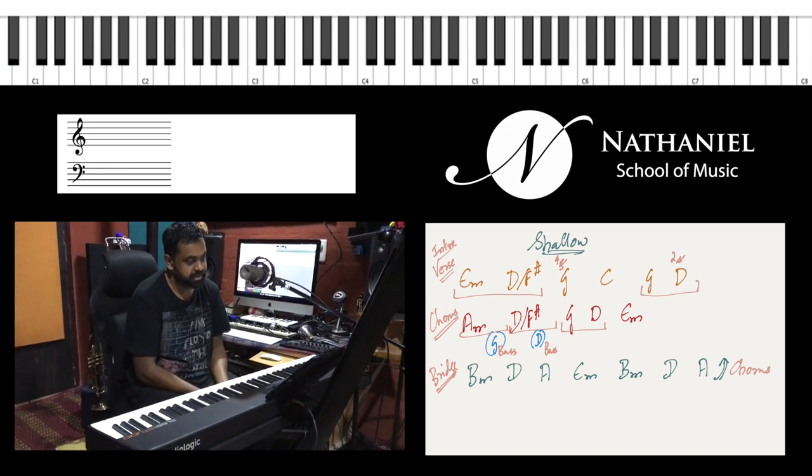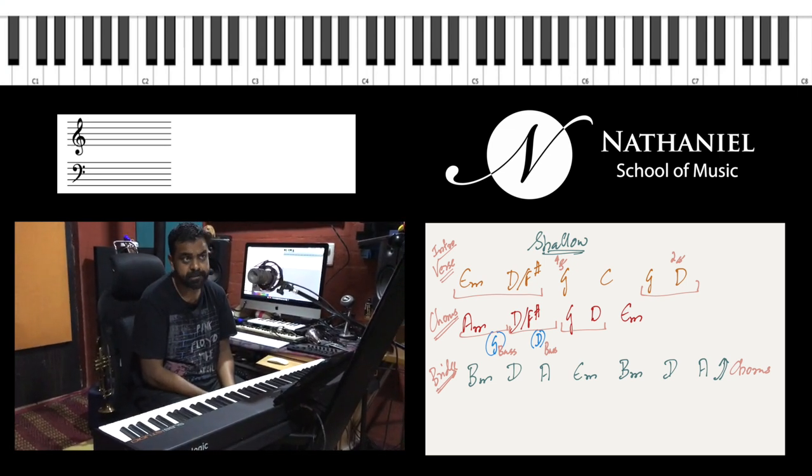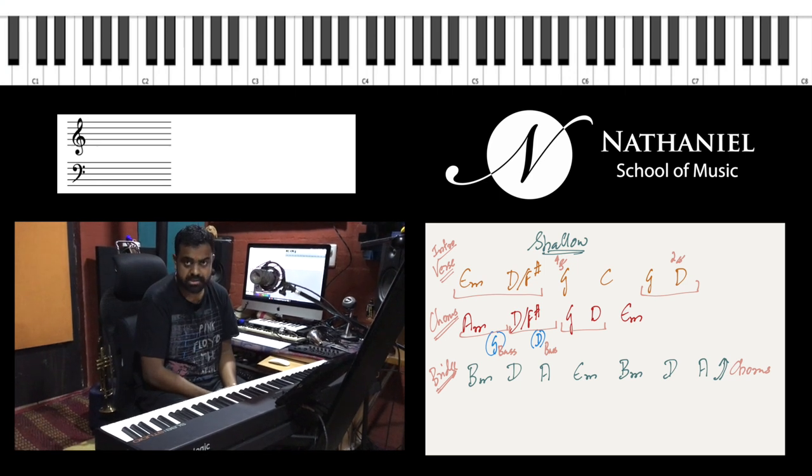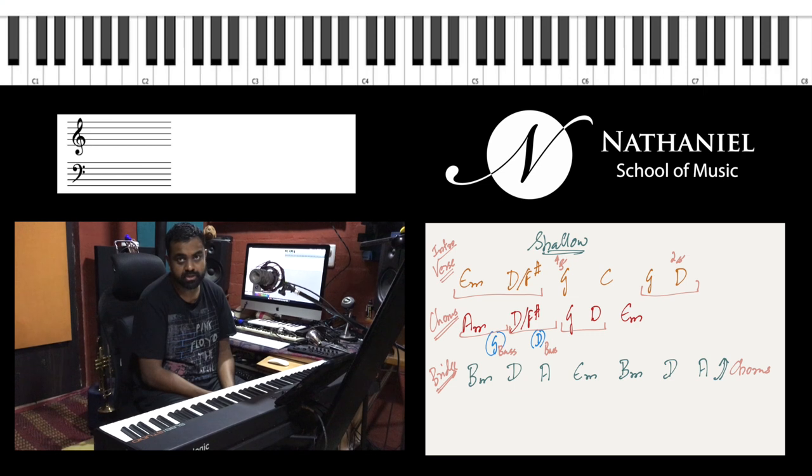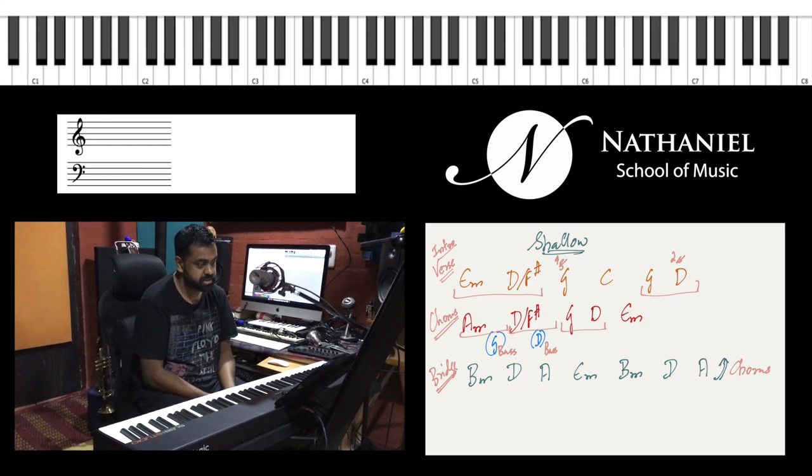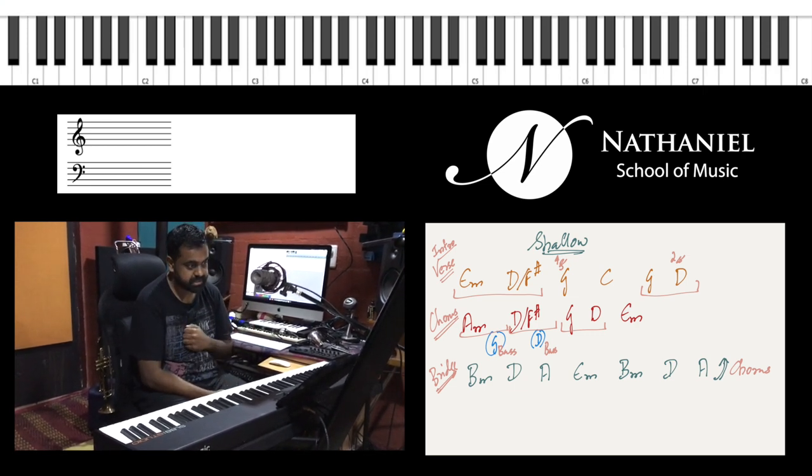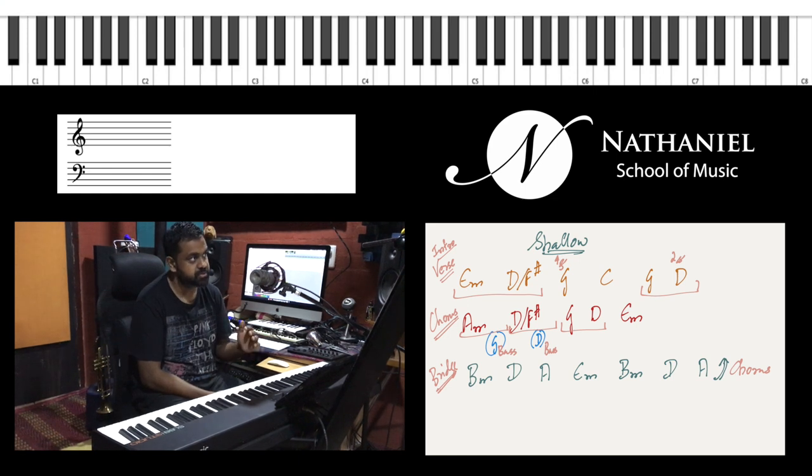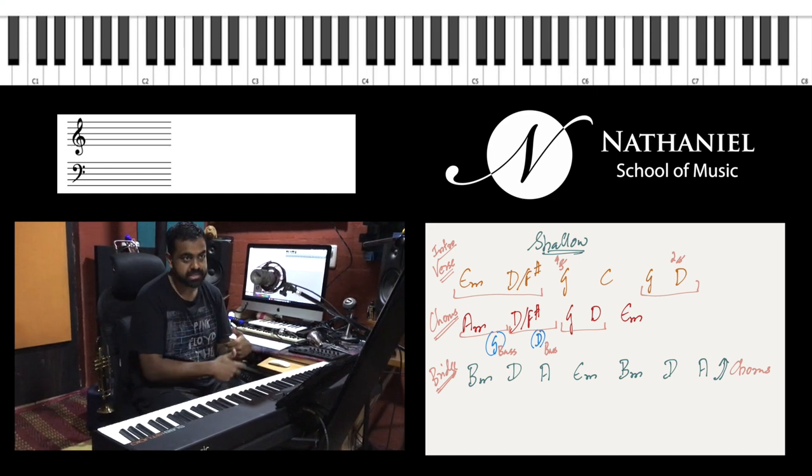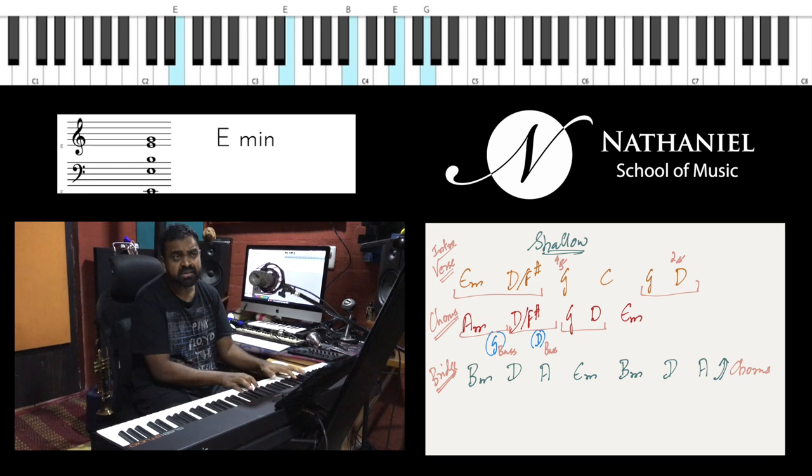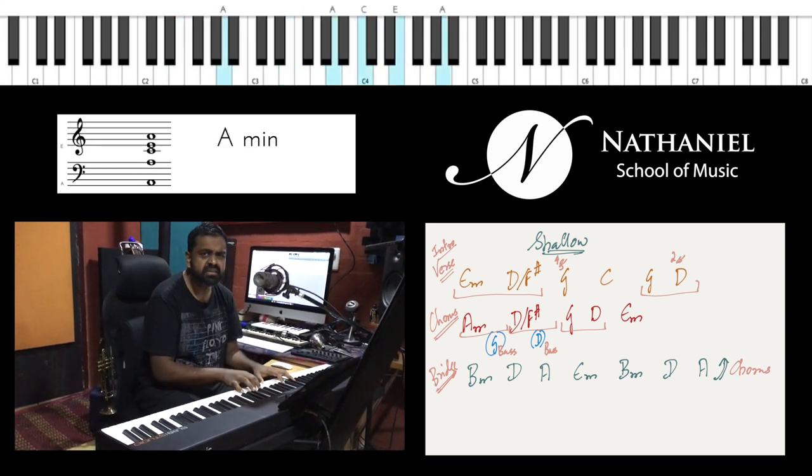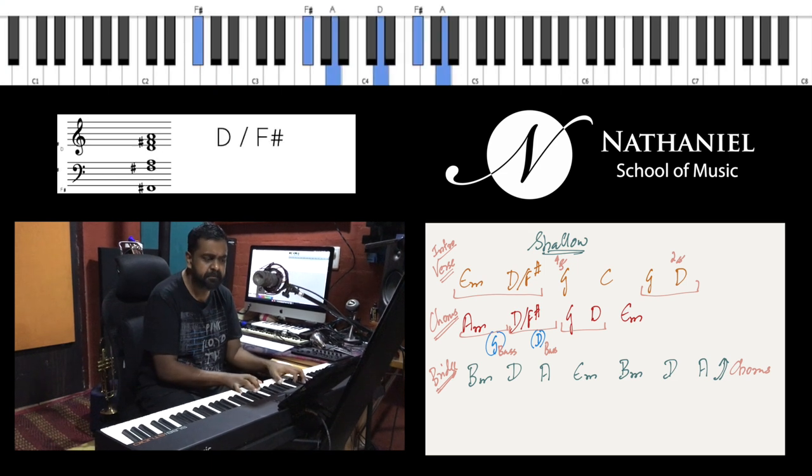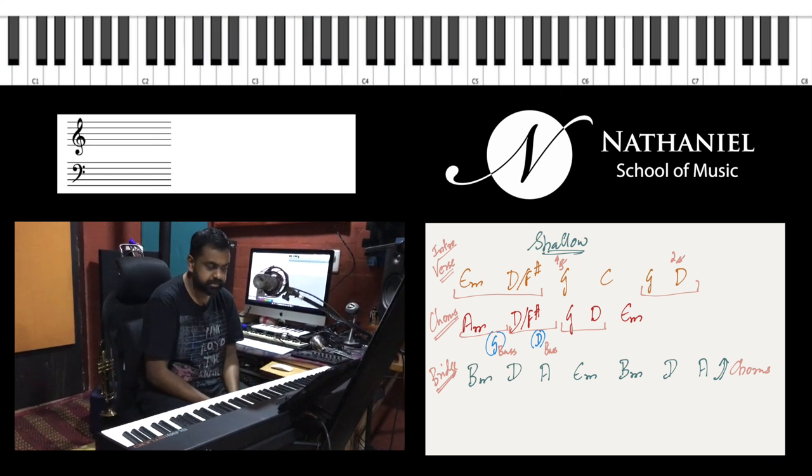And then you have the minors which are used as well. E minor starts the song off which is the 6 minor. And A minor is the 2 minor which is also used in the chorus when they start. So they start the verse and the chorus with a minor chord. The verse is E minor and the chorus starts on A minor.